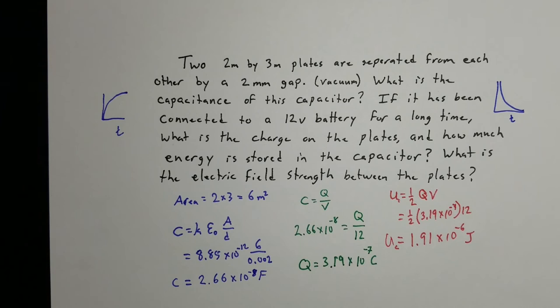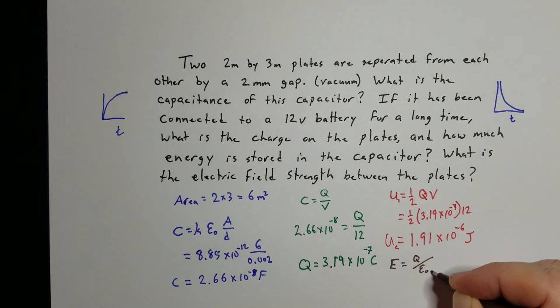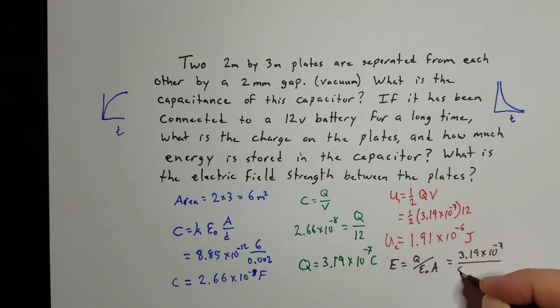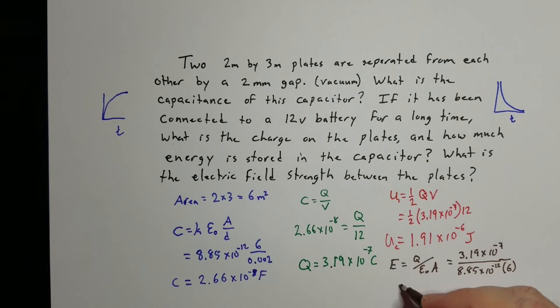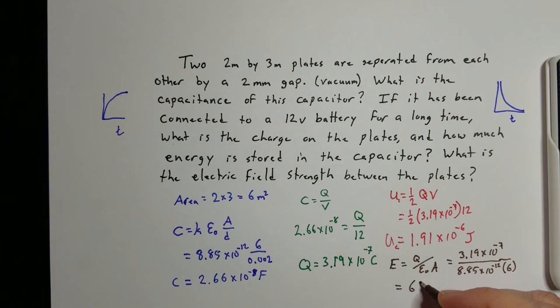For the electric field between the two plates, E = Q / (ε₀ × A). The charge is 3.19 × 10⁻⁷, ε₀ is 8.85 × 10⁻¹², and the area is 6. So E = 3.19 × 10⁻⁷ / (8.85 × 10⁻¹² × 6), which gives an electric field of approximately 6,000 newtons per coulomb between the two plates.